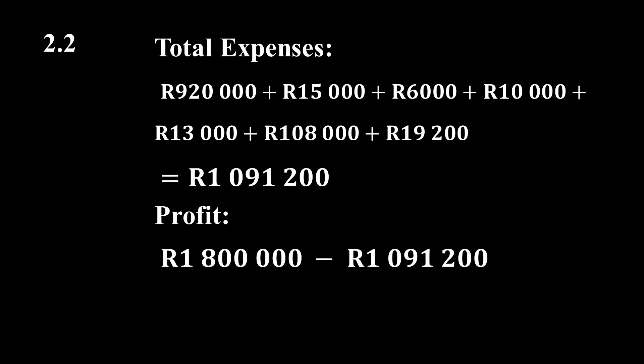Now we can calculate the profit Macedonis would make if she sold the house for the evaluated price. We do this by finding the difference between the selling price of 1,800,000 Rand and the total expense of 1,091,200 Rand. This equals a profit of 708,800 Rand.